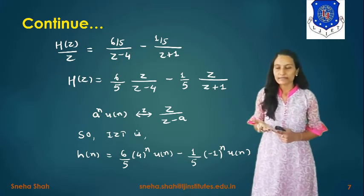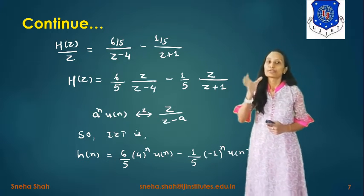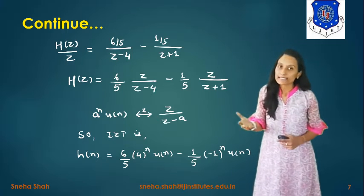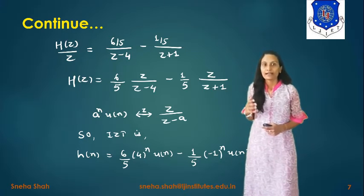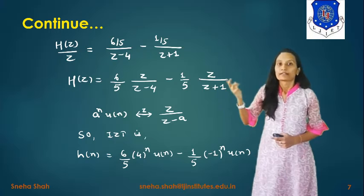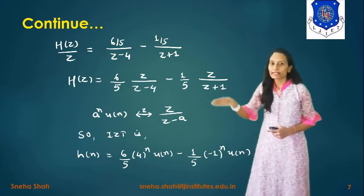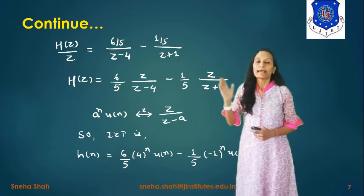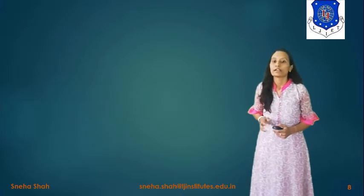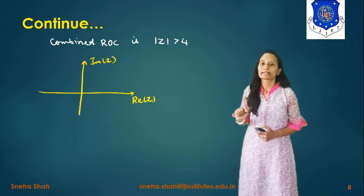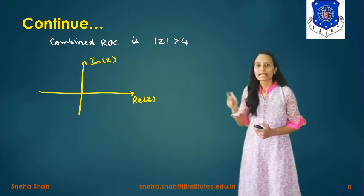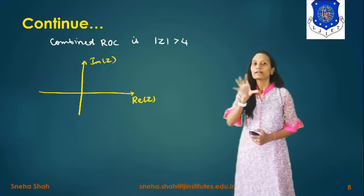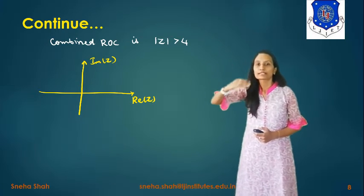Summarizing: we solved the difference equation in terms of y(n) and x(n) by taking the Z-transform, finding Y(z)/X(z) as H(z), then finding H(z)/z and applying partial fraction expansion to get the inverse Z-transform h(n). Now to check stability and causality: the combined ROC is |z| > 4, since there are two factors with poles at 4 and -1, and the outermost circle dominates, giving ROC as |z| > 4.